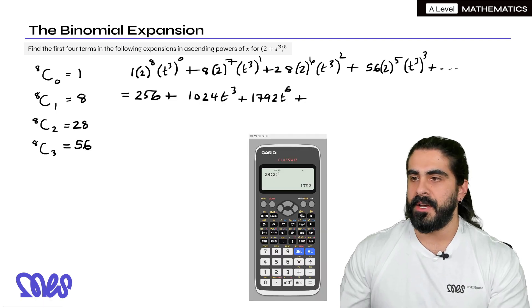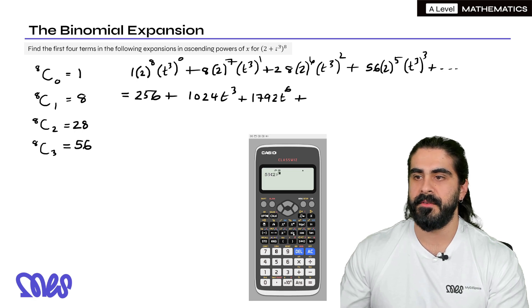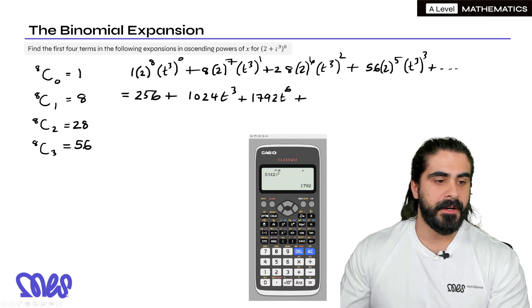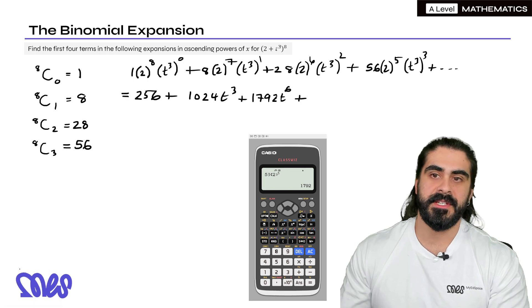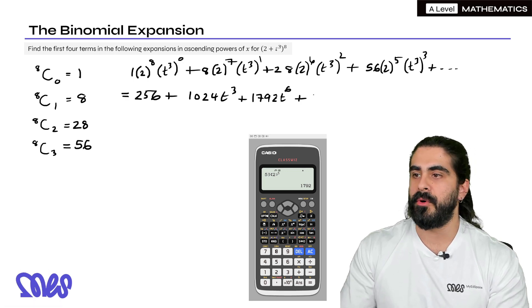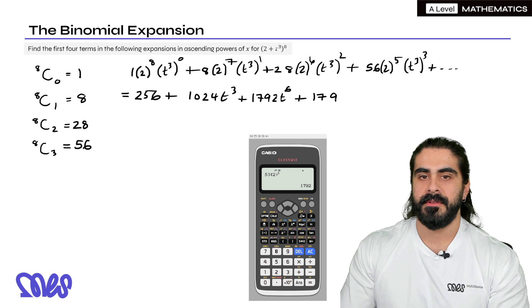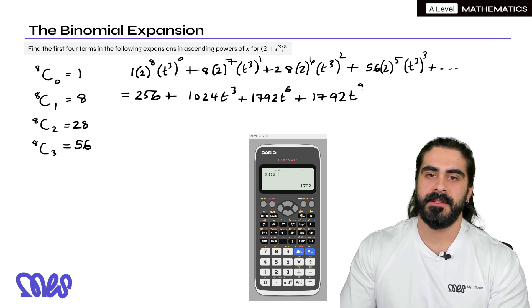We just need to compute. And then the last term we have 56, two to the power of five. Now remember, when we're doing t cubed cubed, we are multiplying the powers. Using our index rules. So it'll be t to the power of nine plus dot dot dot. And that is our solution.